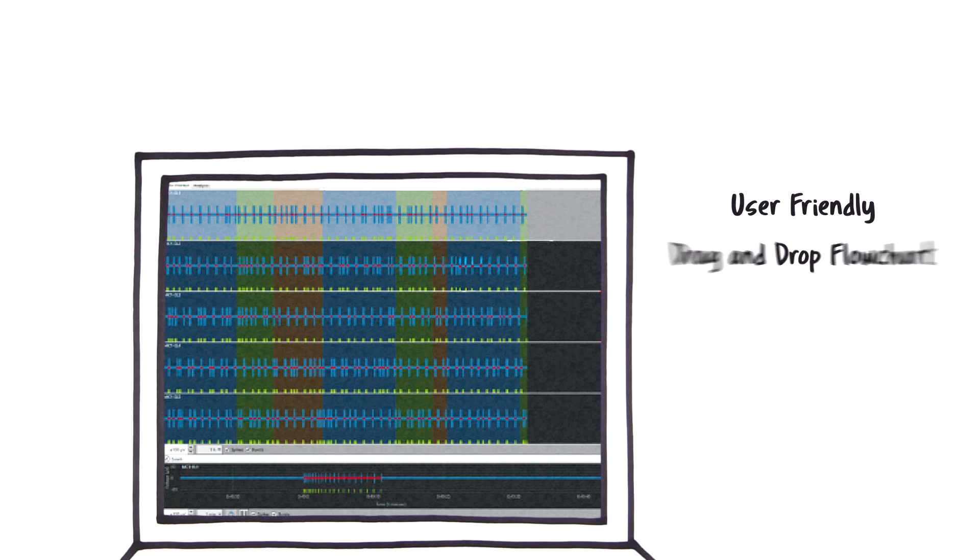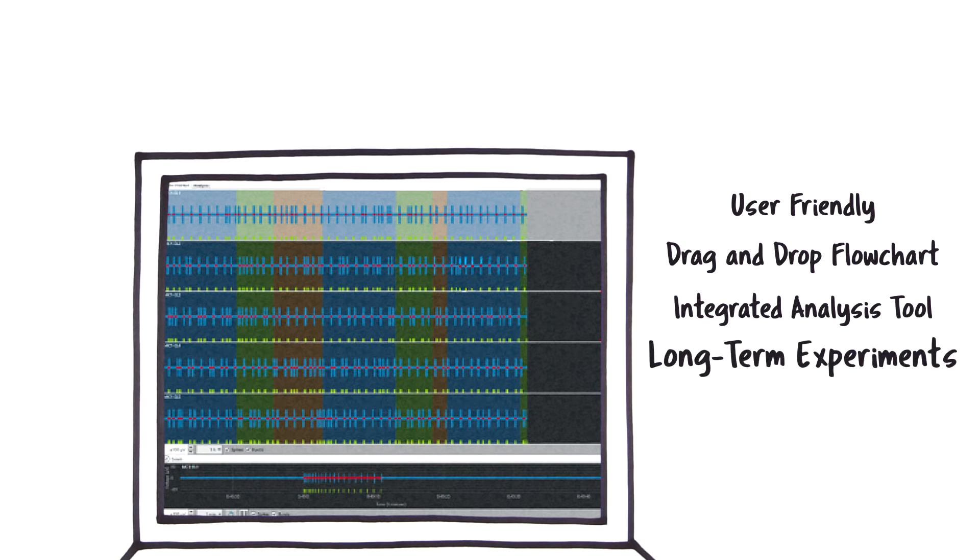With its user-friendly drag-and-drop flowchart design, BetaScreen becomes an integrated analysis tool that allows us to visualize long-term experiments with islets of Langerhans.